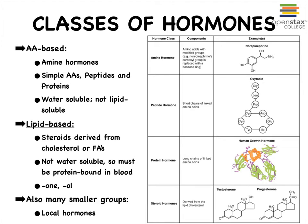Coming back to our two major groups: those hormones that are made up of amino acids, which we can call amine hormones, can be as small as a simple amino acid or just a few amino acids — where we refer to them as peptides — or long, complex chains of amino acids to where they're literally proteins.